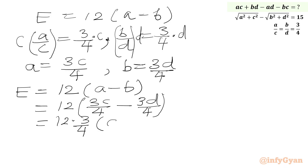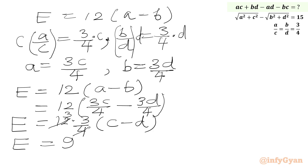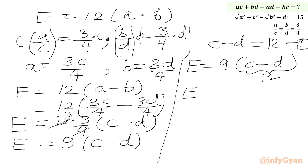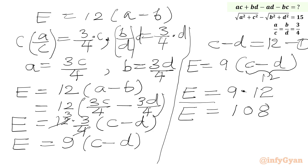So the expression becomes 12 times 3 over 4 times (c minus d). Since 12 over 4 is 3, we get 3 times 3 is 9 times (c minus d). Using equation 1, c minus d equals 12, so e equals 9 times 12, which is 108. Our final answer is 108.